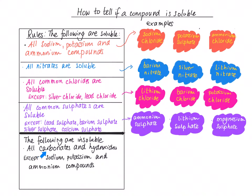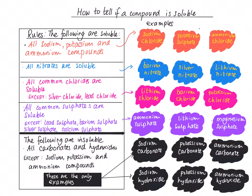Last but not least, all carbonates and hydroxides are insoluble, except for sodium carbonate, sodium hydroxide, potassium carbonate, potassium hydroxide, ammonium carbonate, and ammonium hydroxide. As stated above, all sodium, potassium, and ammonium compounds are soluble. So these six compounds — three carbonates and three hydroxides — are the only carbonates and hydroxides that dissolve in water, because they contain sodium, potassium, or ammonium.